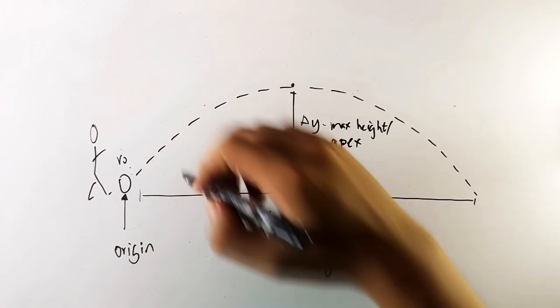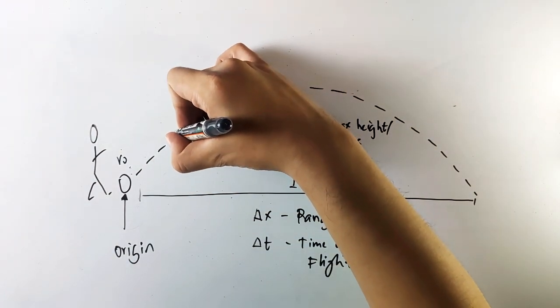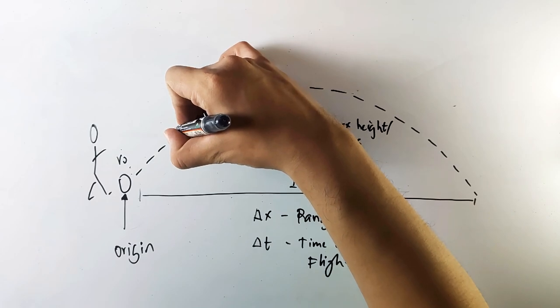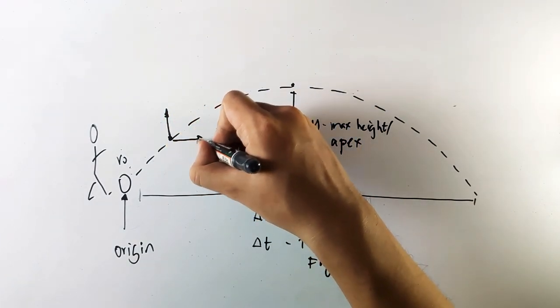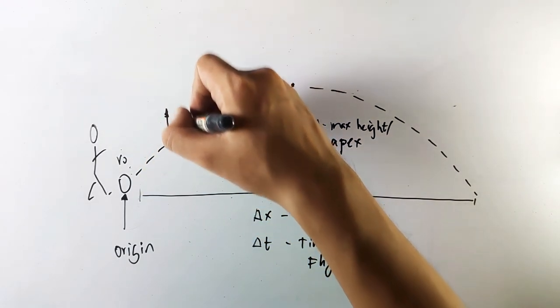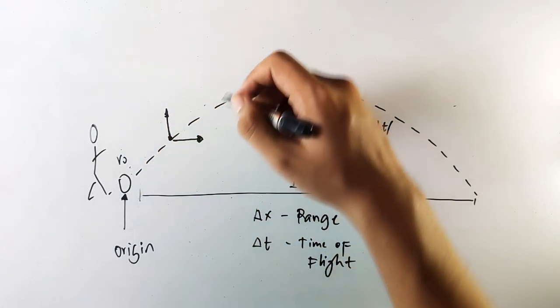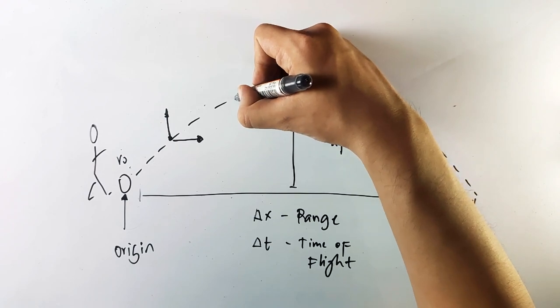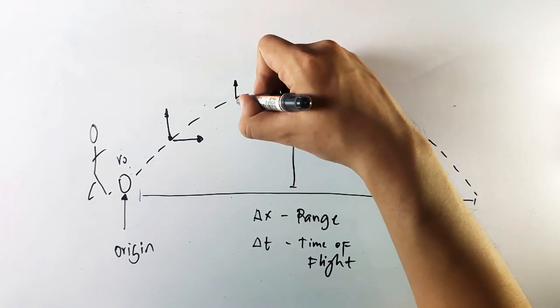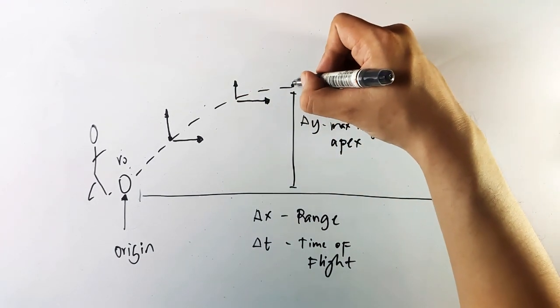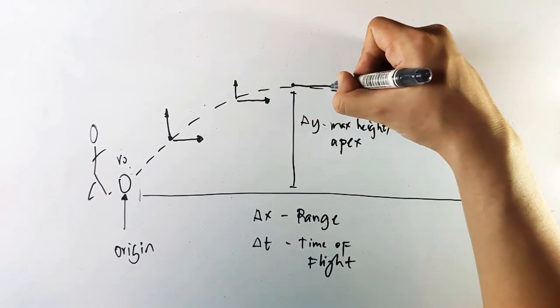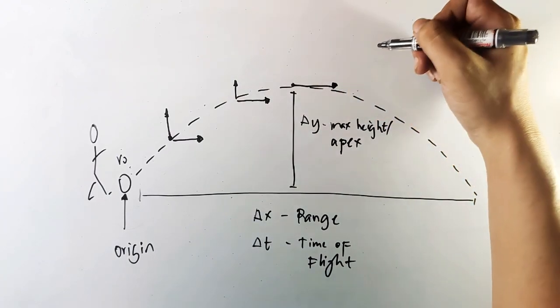There would always be an x component and a y component. Let's say at this point the ball is moving in this direction and this direction as well—it's still moving upward and moving forward. Then coming at this point it will get slow, but the length of the motion on the x-axis is still the same. When it reached this point it's just moving horizontally.